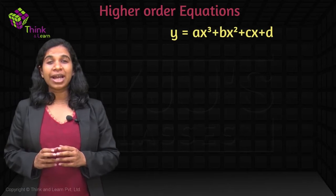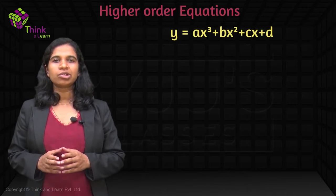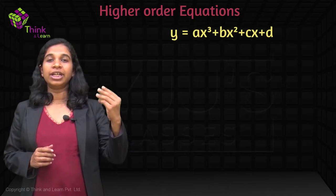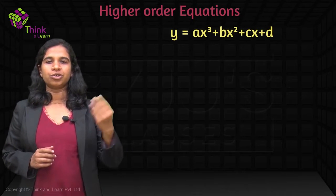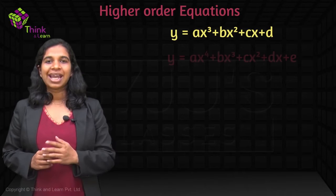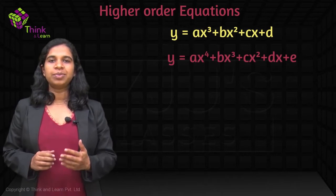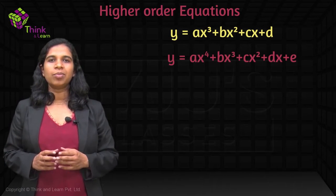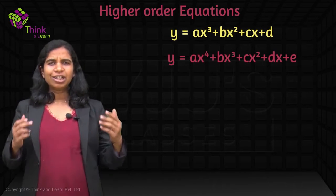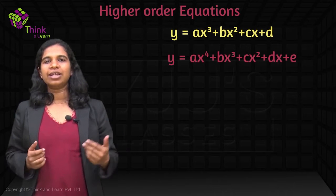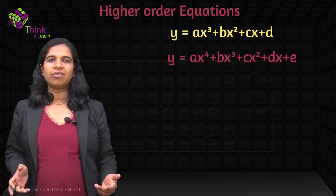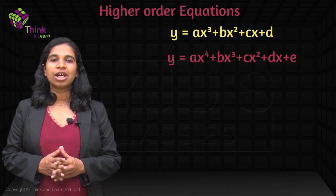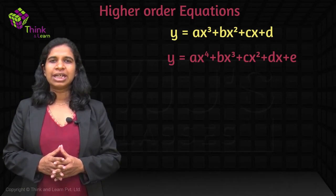Or a biquadratic equation, which means 2 quadratics — degree 4, 2 plus 2: Ax raised to 4 plus Bx cubed plus Cx squared plus Dx plus E. That would be a biquadratic. And so on — you can write an equation of degree 5 and beyond. All of these are higher order equations.